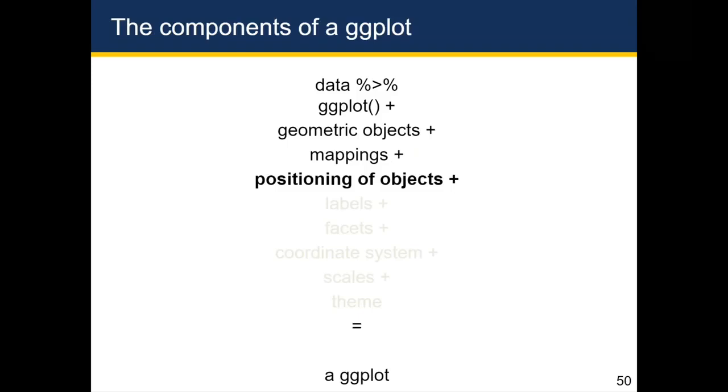Okay, so we've covered starting with data, ggplot, add the geometric object, add the mappings, which typically go inside the ggplot function but can go inside the ggplot object, always specified by the AES function to specify that this is a mapping and not a fixed value.